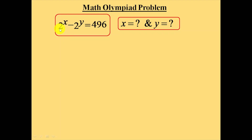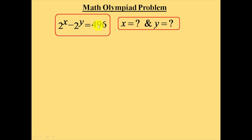Here, in the equation provided to us, we can see that when 2 power y is subtracted from 2 power x, we are getting 496, which is a positive number. When we subtract this number from this number, we are getting a positive value. So that means 2 power x should be bigger than 2 power y — only then will we get a positive result. If 2 power x is smaller than 2 power y, then we will be getting a negative number. So in this case, we can say that 2 power x is greater than 2 power y.